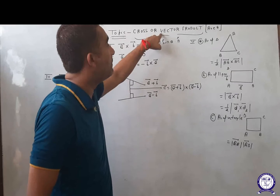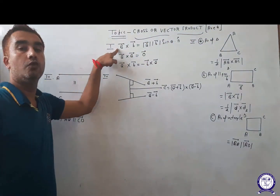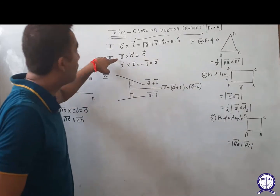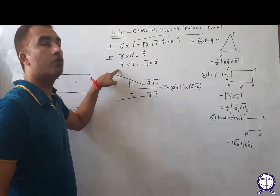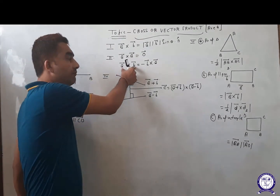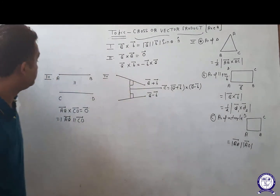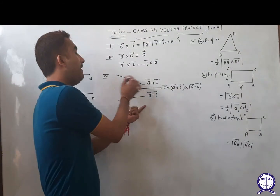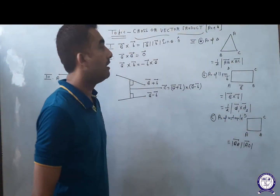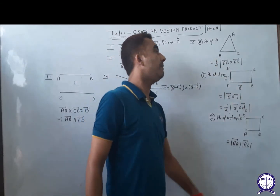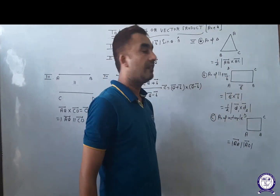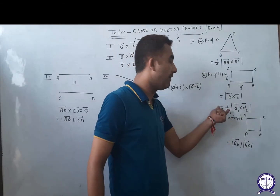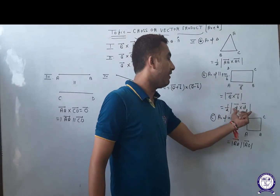CROSS or vector product is used when a vectors question asks about area. To recap: CROSS between two vectors equals magnitude of first, magnitude of second, times sine of the angle. CROSS of same vectors is always zero vector. It is not commutative — replacing vectors gives a negative sign. If two vectors are parallel, their CROSS is always zero. A single vector perpendicular to both vectors is the CROSS of both. Area of triangle is half the magnitude of AB CROSS AC. Area of parallelogram: if adjacent sides are given, take the magnitude of their CROSS; if diagonals are given, take half the magnitude of their CROSS.